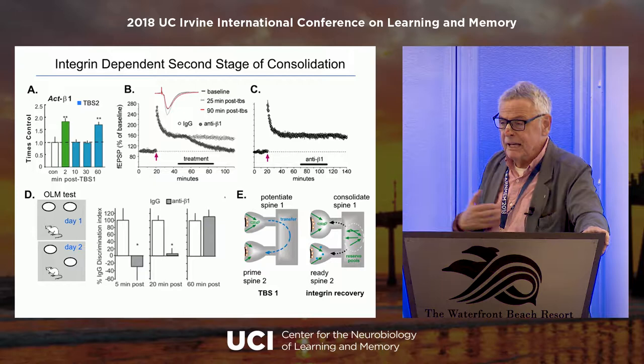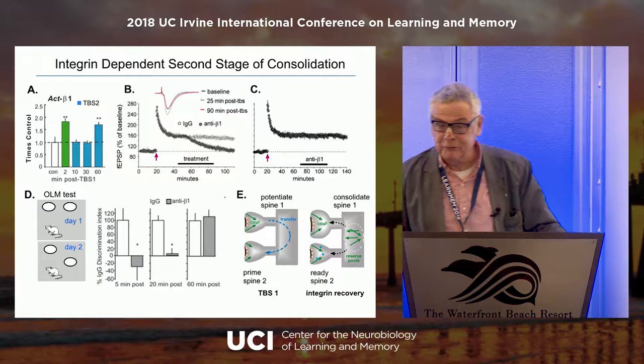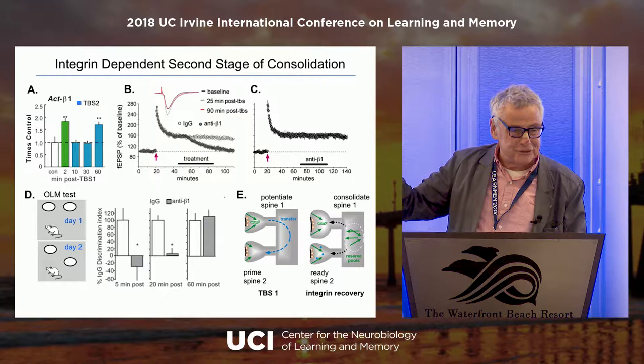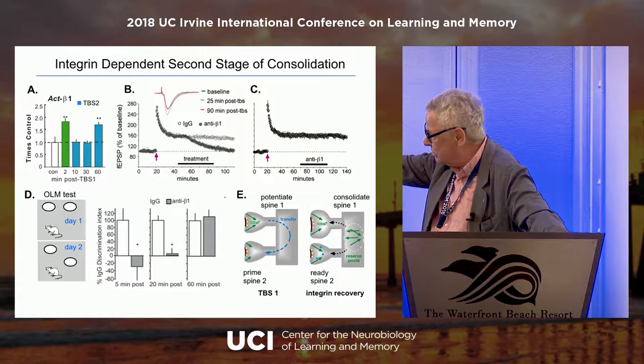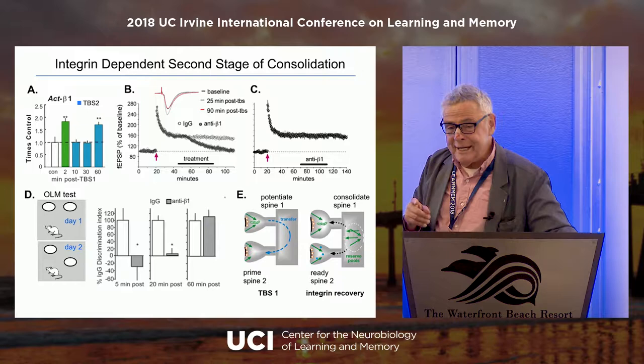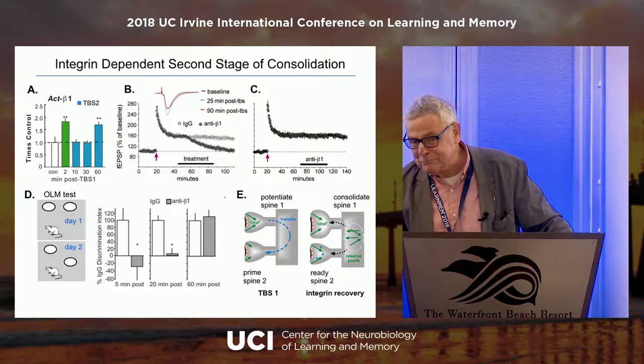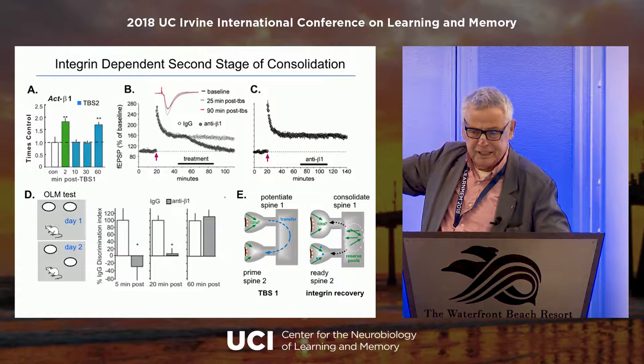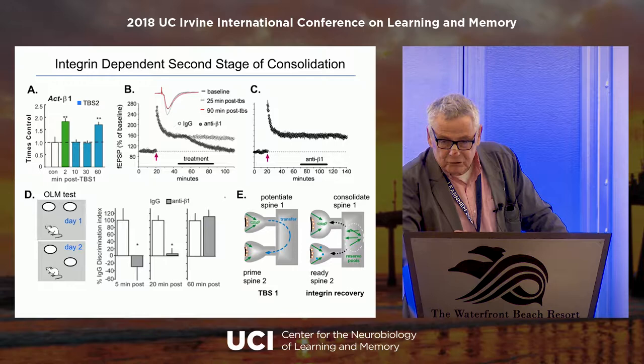That was fascinating to us because it led to an experiment: suppose you block the integrins before they become responsive — what happens? The LTP goes away. We blocked them with neutralizing antisera incredibly selective for activated beta-1 integrin, and the LTP just slides back to zero. But if you wait until after the integrins have re-entered their responsive state and do the same manipulation 20 minutes later, it has no effect at all on the LTP. This is a discovery of a second stage of LTP consolidation that we had no idea existed, suggested by substrates.